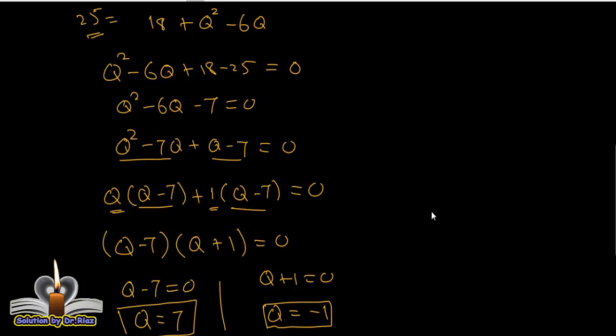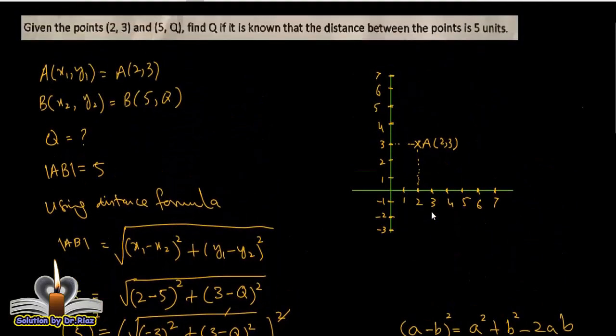We can mark these points on the graph. Point A which is (2, 3): x coordinate is 2 and y coordinate is 3. So point A is here.